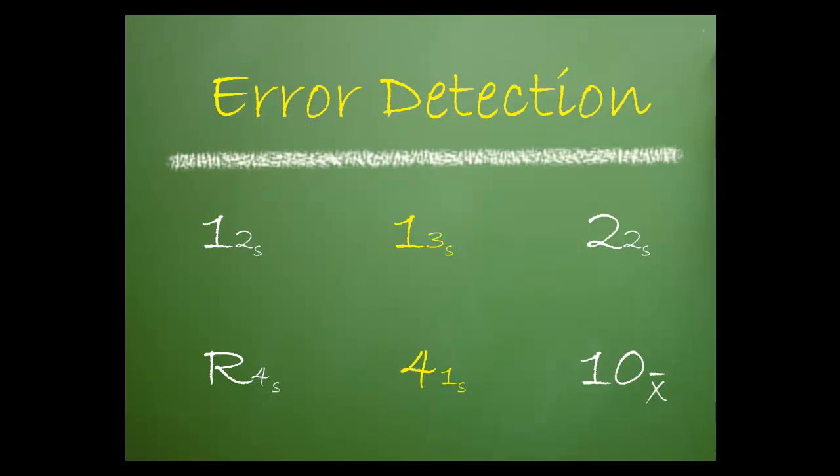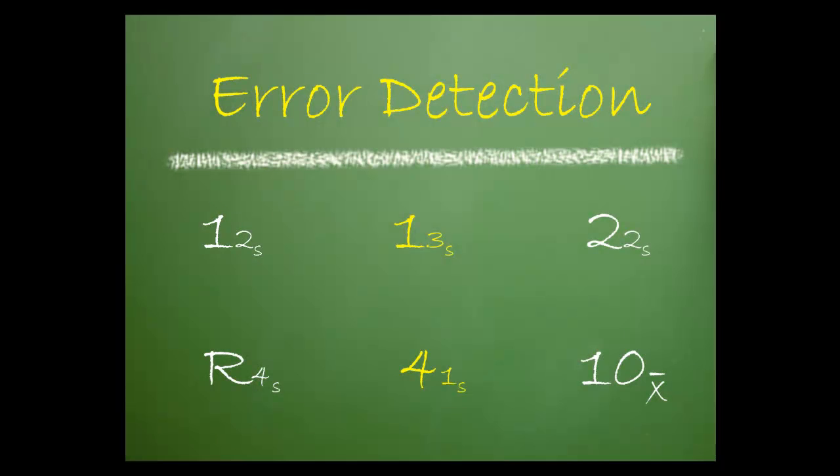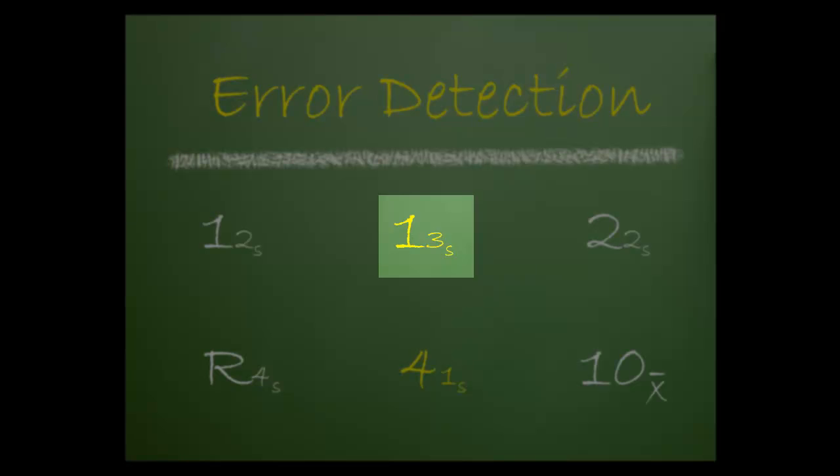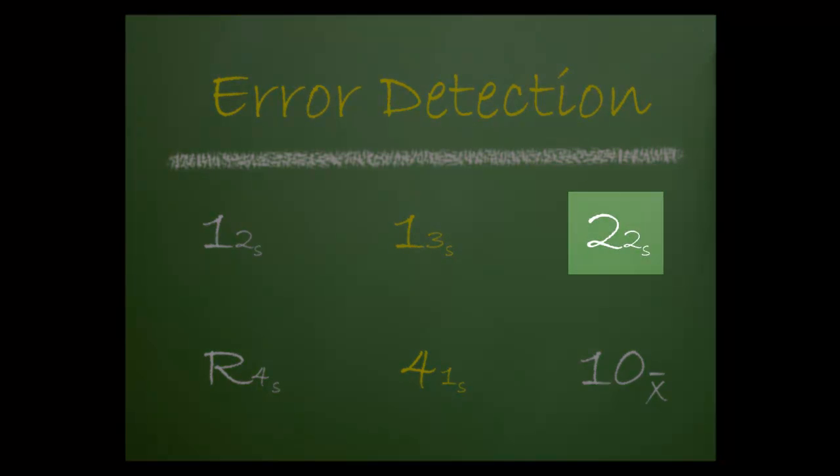So practically, how does each rule help with error detection? 1-2s merely warns that random or systematic error may be present in the test system. 1-3s identifies unacceptable random error or possibly the beginning of a large systematic error. 2-2s only identifies systematic error.